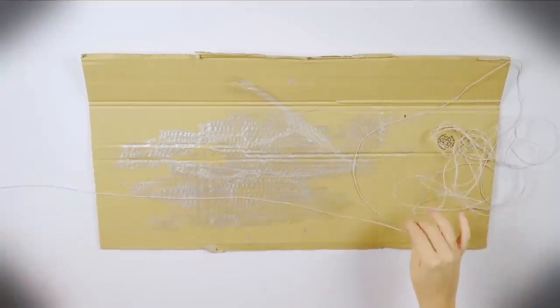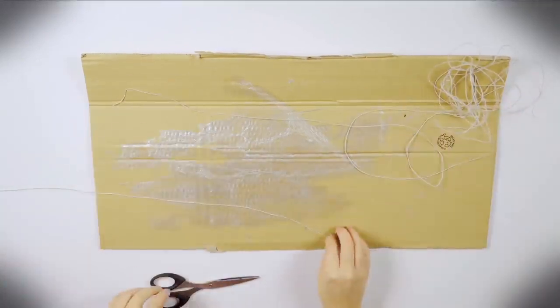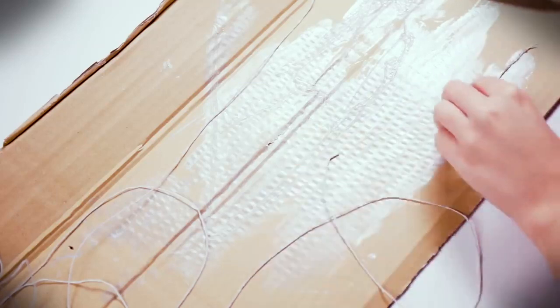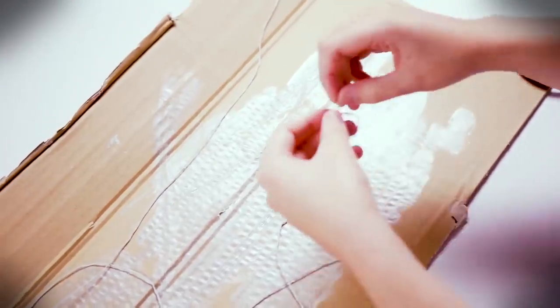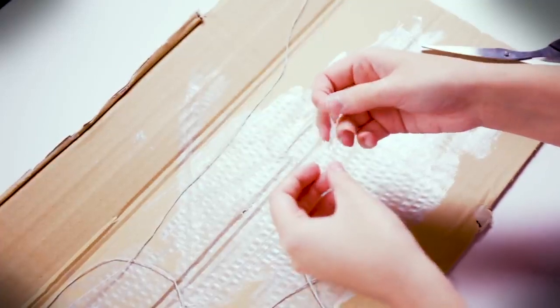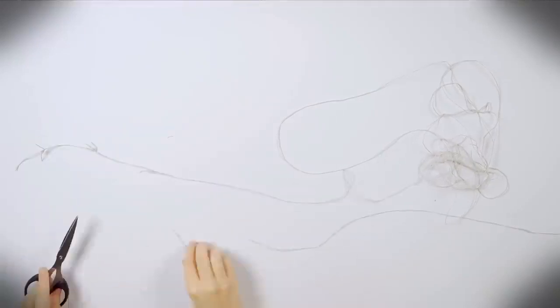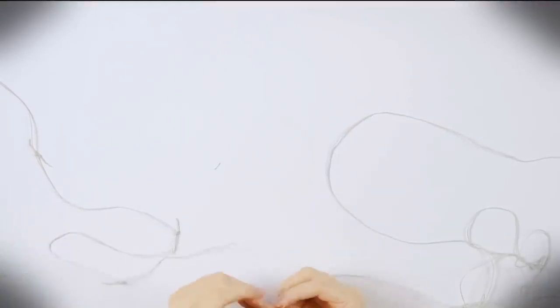Cut the thread in two, a piece longer than the other. From the smallest thread, cut a few pieces and knot it to the longer thread, simulating barbed wire.